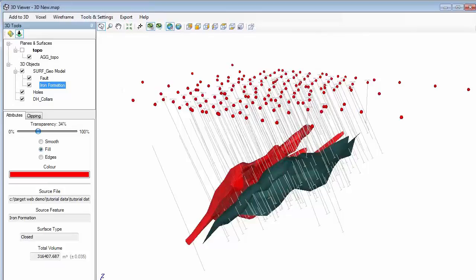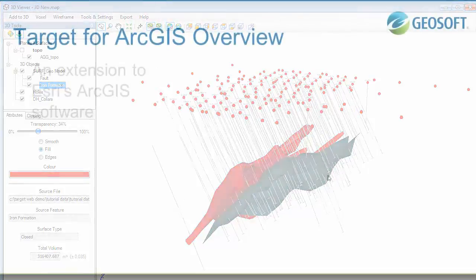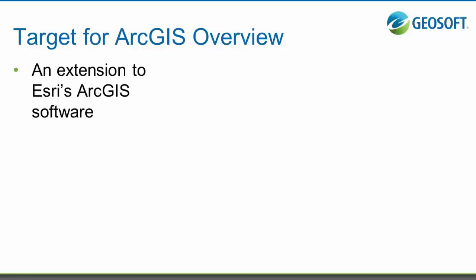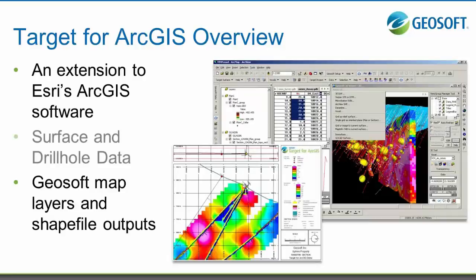That brings me to the end of my digitizing and wireframing workflow. The last thing I am going to show you is Target for ArcGIS. Target for ArcGIS is an extension that runs within ESRI's ArcGIS software. It is the same Target surface and drill hole tools, but available within ArcGIS. The benefit of working in ArcGIS is that you can output your plan maps, section maps, and strip logs as GeoSoft map layers using our GeoSoft template, or you can generate your data plots as a series of shapefiles — points, lines, polygons — and use ESRI's symbology tools to symbolize your map.